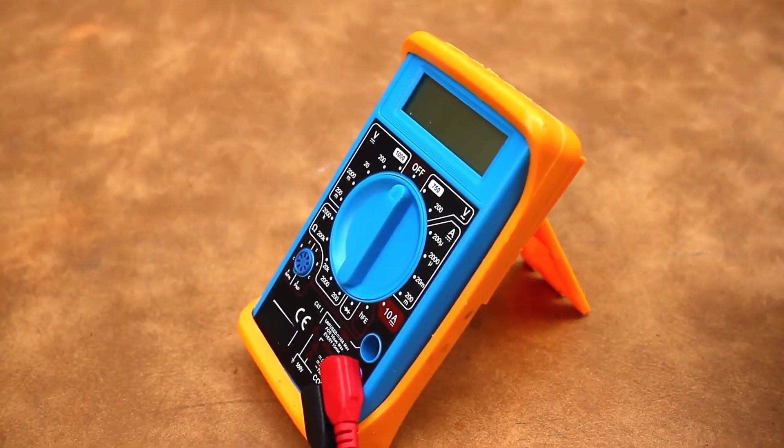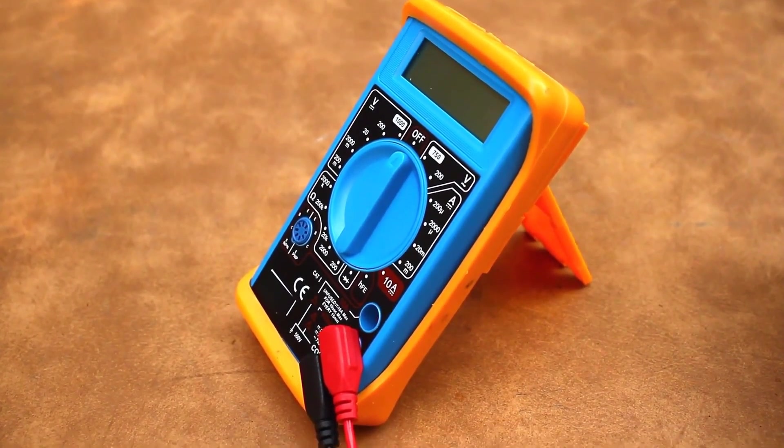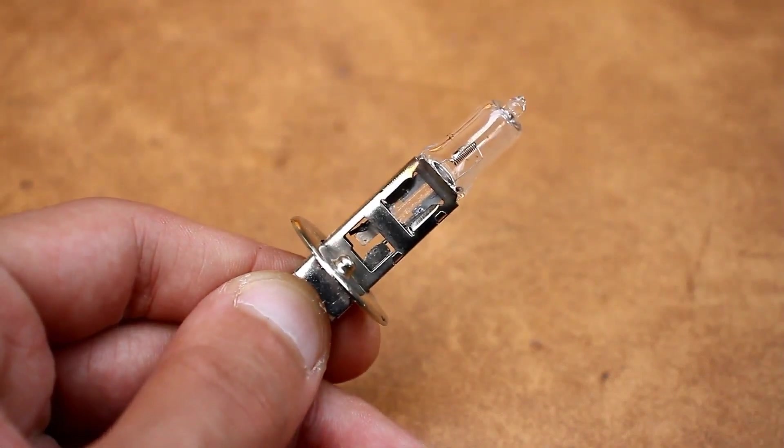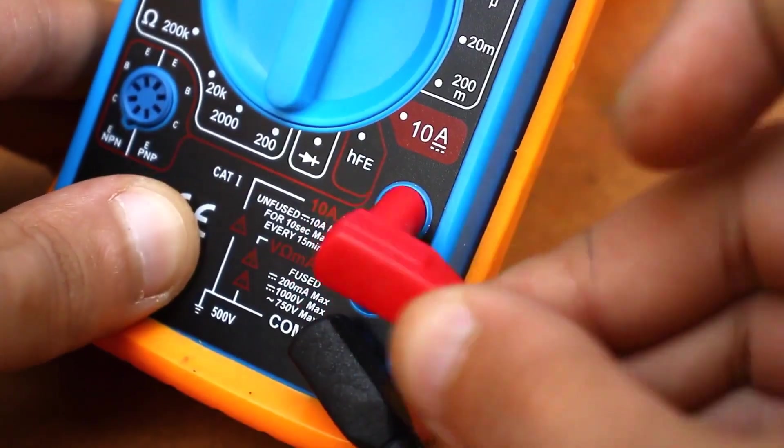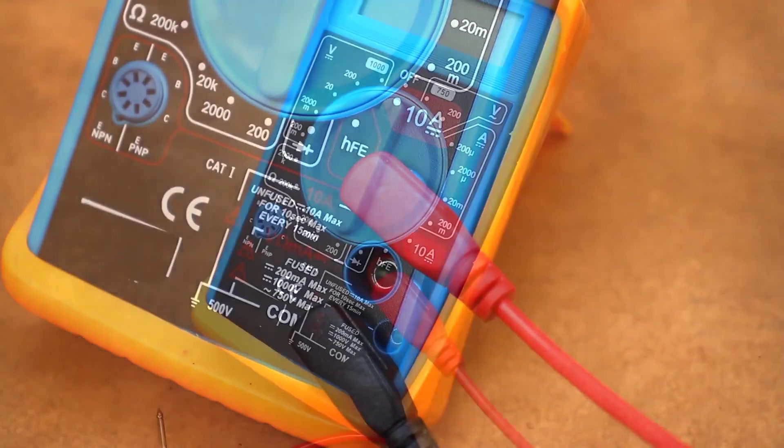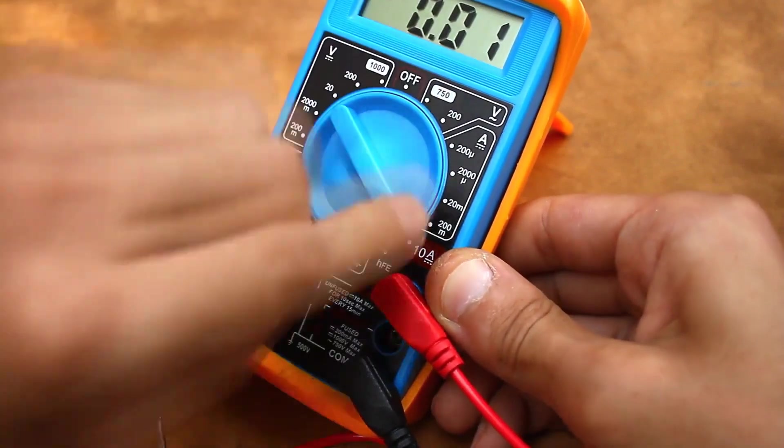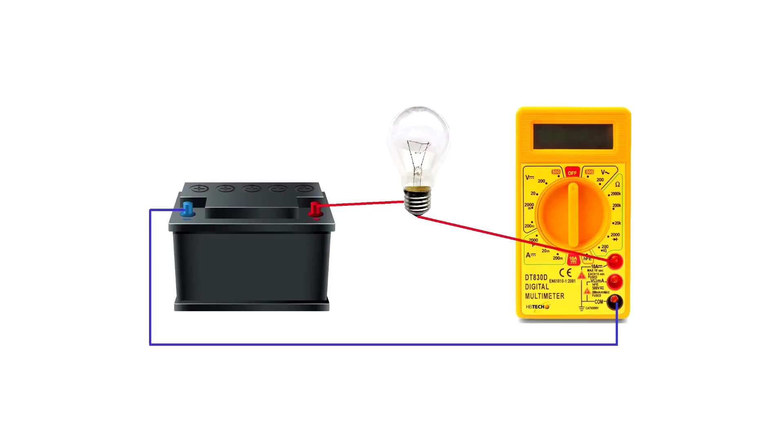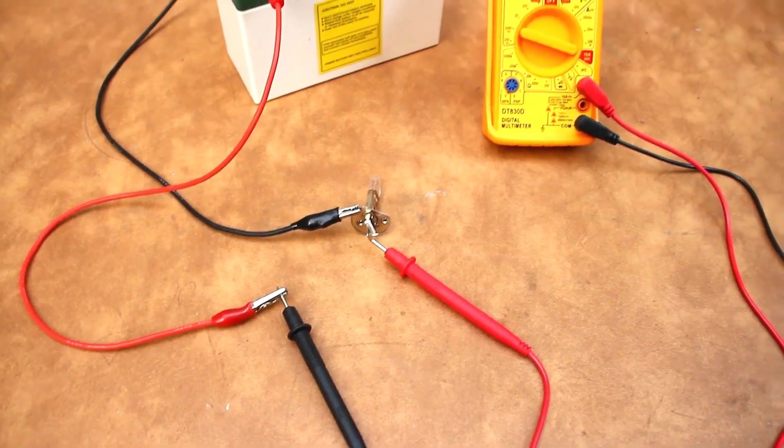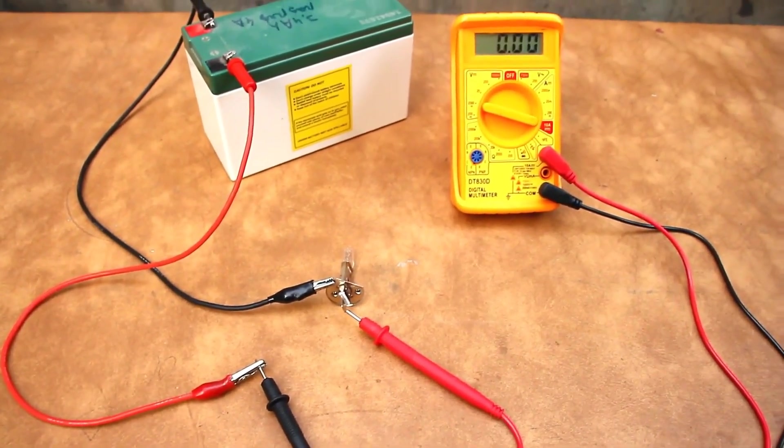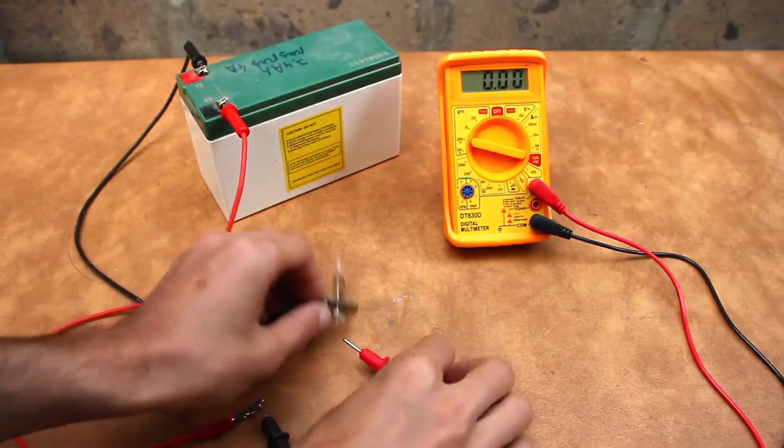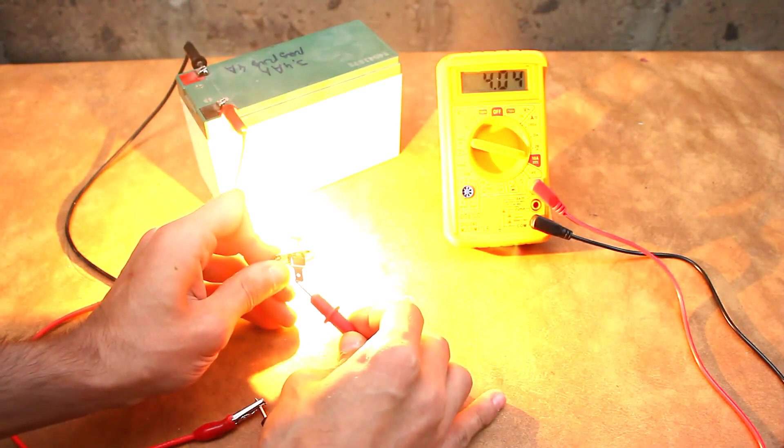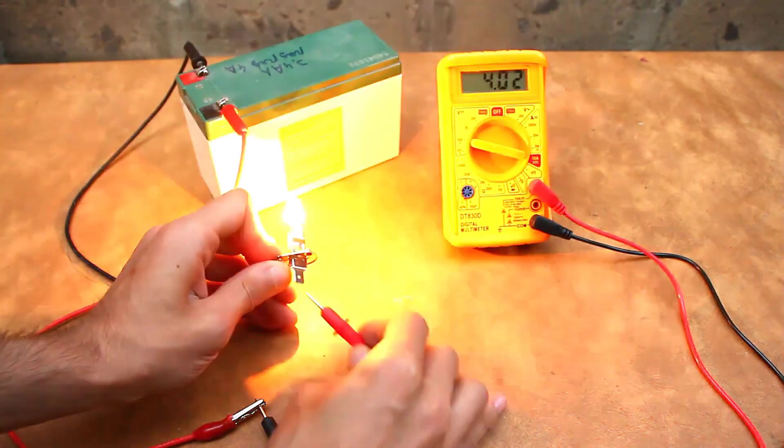When measuring direct current, for example, if you need to understand how many amps a car bulb consumes to assess its power, the red probe is moved to the terminal labeled 10A and the multimeter is switched to the appropriate mode. Connect the bulb or another load, whose current consumption needs to be measured, in series with the battery and the multimeter. On the display of the latter, we will see the current value flowing in the circuit or the current consumption of the bulb in amps.